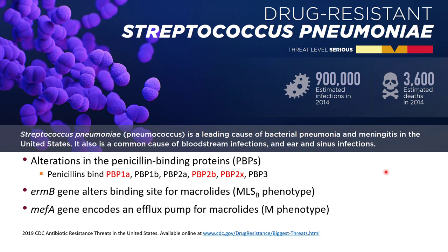The CDC has designated a serious threat level to drug-resistant Streptococcus pneumoniae. The mechanism of resistance to beta-lactams involves alterations in the penicillin-binding proteins, or transpeptidases, which are the binding sites for beta-lactams. Note that it does not involve production of beta-lactamases, so beta-lactamase inhibitors are not going to overcome this resistance. Specifically, penicillins bind penicillin-binding proteins 1A, 1B, 2A, 2B, 2X, and 3.